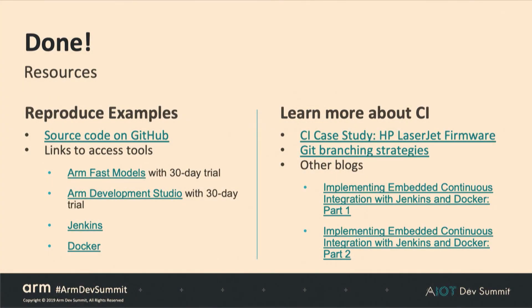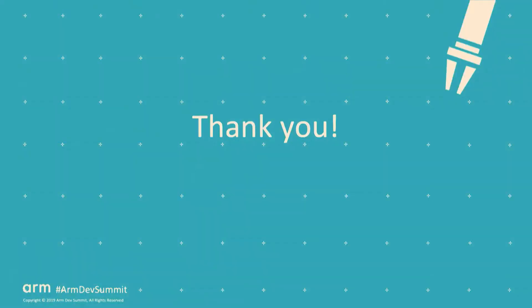For resources: we have source code on our GitHub, access to fast models with 30-day trials, Arm Development Studio with 30-day trials, and links to Jenkins and Docker — everything you need to reproduce these examples. We also have a case study using HP LaserJet firmware with Git branching strategies, and blogs on implementing embedded continuous integration with Jenkins and Docker in parts one and two.